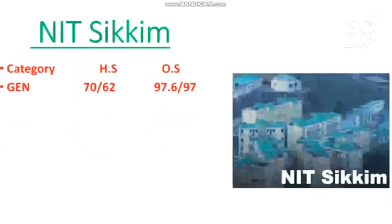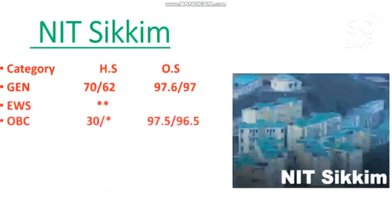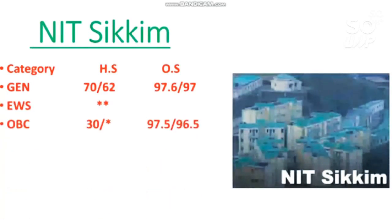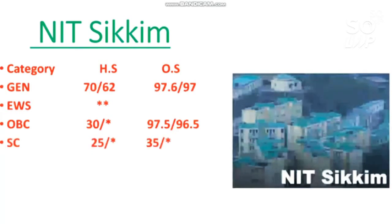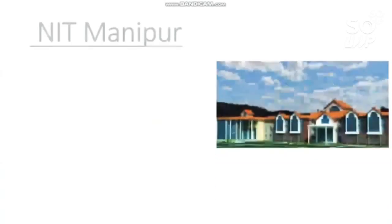For EWS: no seat. For OBC: 97.5 and 96.5. If you are from home state, you can get this NIT at just 30 percentile — that's good news for home state students. For SC candidates, 35 percentile is required. For ST: no seat is reserved.